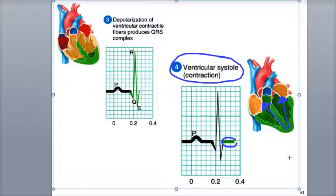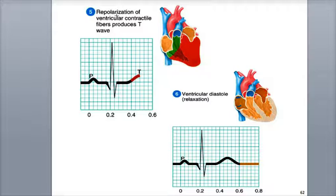As both ventricles contract, blood is pushed up towards the semilunar valves. Next, the ventricle's contractile fibers repolarize, starting at the apex and then moving up throughout the ventricle's myocardium. This ventricular repolarization correlates on the ECG with the T wave, shown here in red on the graph, taking place about 0.4 seconds after the start of the initial P wave.